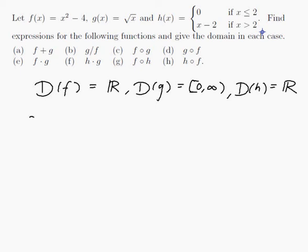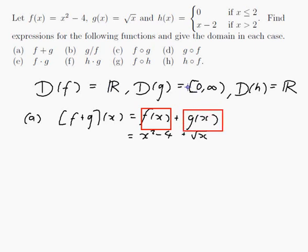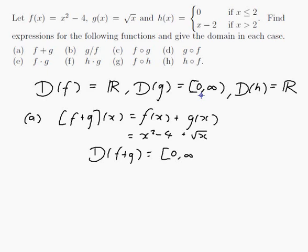Now we can actually do the questions. Part a: f plus g. Well, f plus g is the function made by adding the formulas for f and g separately. So f plus g of x equals f of x plus g of x, which is x squared minus 4 plus the square root of x. For the domain, I need both functions to be defined, and g of x is only defined from 0 to infinity, so the domain of f plus g is from 0 to infinity.